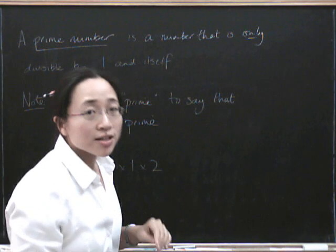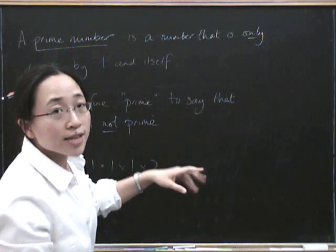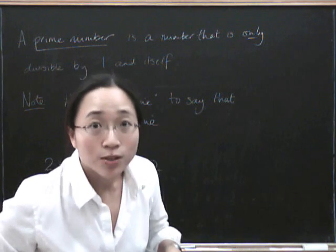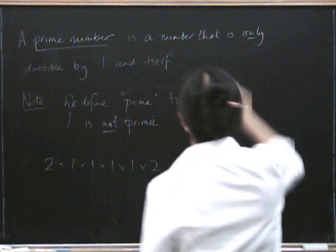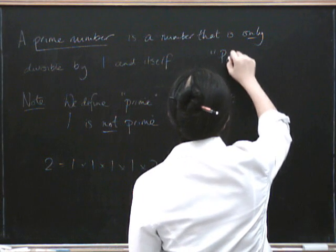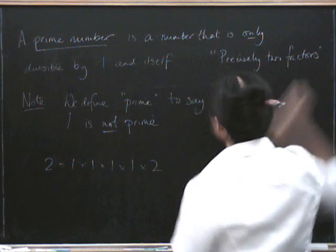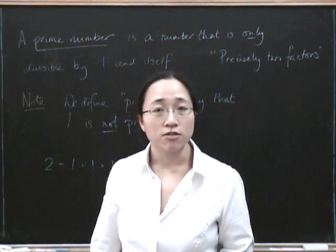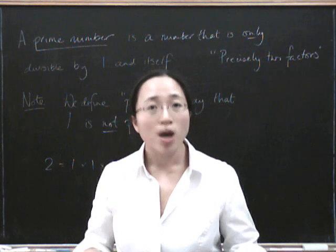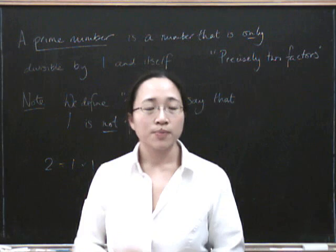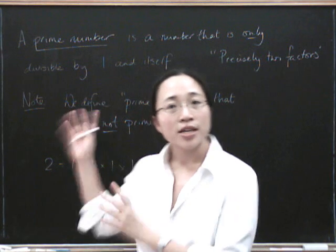Often when you're doing definitions in maths, you have to close off some silly loophole. So when we define prime we throw in a clause that says 'by the way, one doesn't count as prime.' Some people say that prime numbers have precisely two factors, because one itself doesn't have precisely two factors — one only has one factor. So another way we can do it is to say a number is prime if it isn't one and it's only divisible by one and itself. There's also another characterisation of prime numbers that we'll do later, but this will do for now.